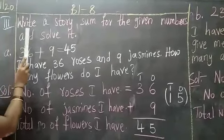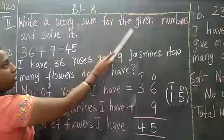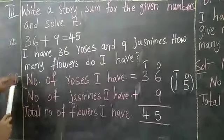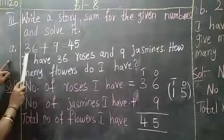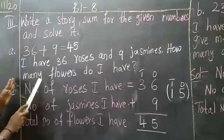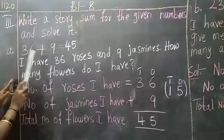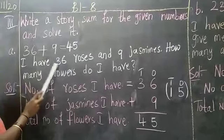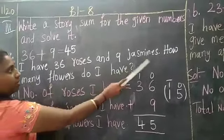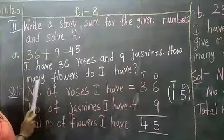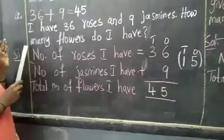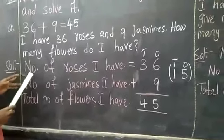The third bit is write a story sum for the given numbers and solve it. Here A1, first one is 36 plus 9. This is a story problem. You have to write in a story problem. I have 36 roses and 9 jasmines. How many flowers do I have children?